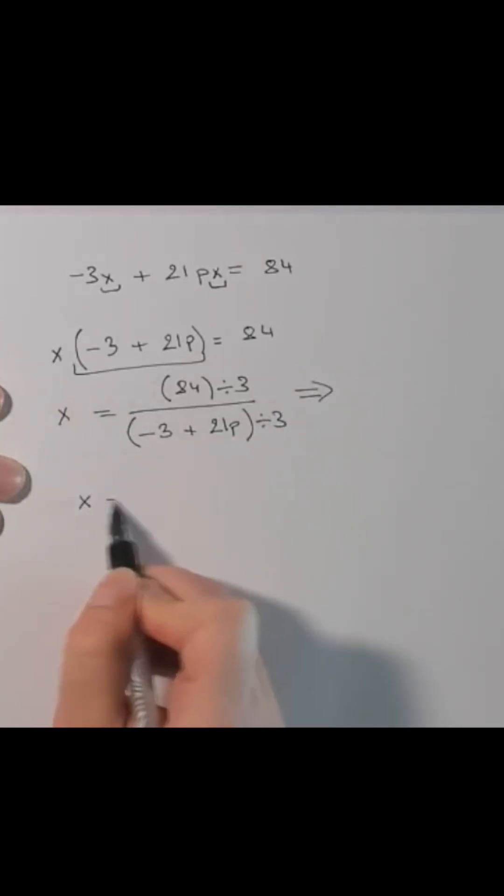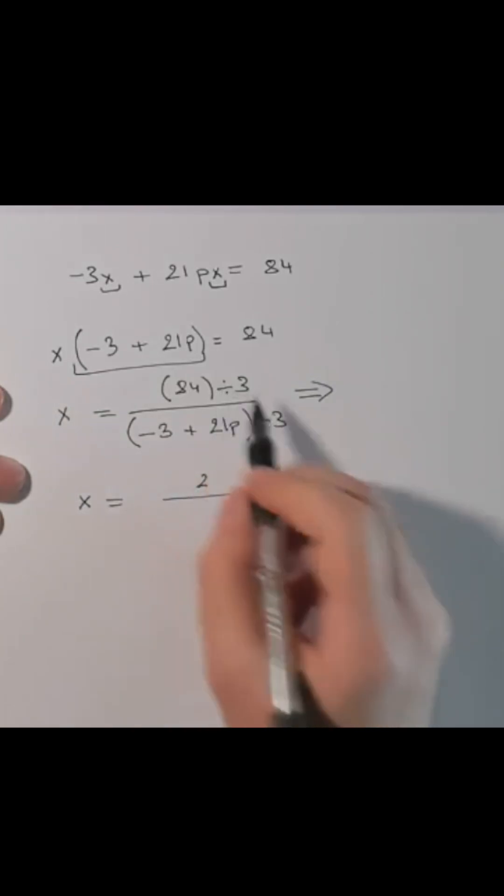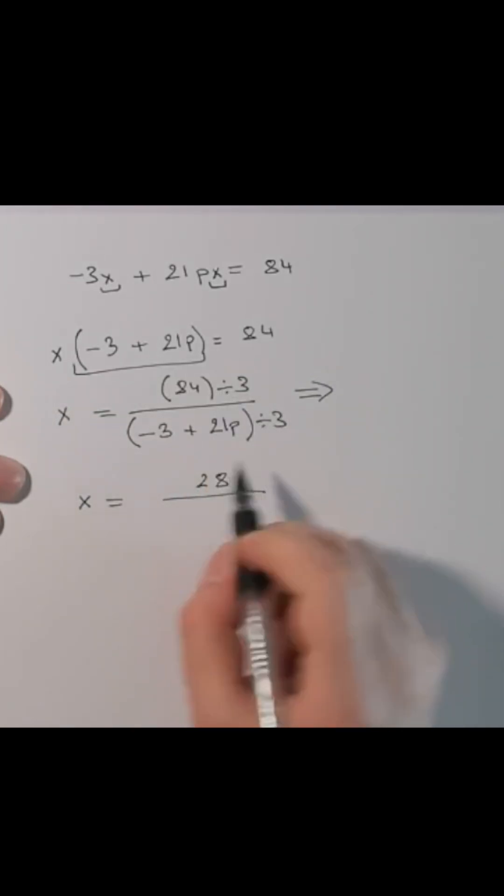We will get x equals, 84 by 3 is 28, 3 by 3 is 1, 21 by 3 is 7, so it's 7p.